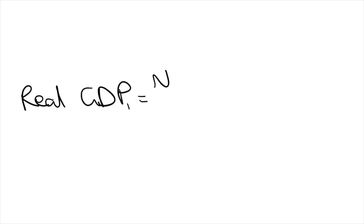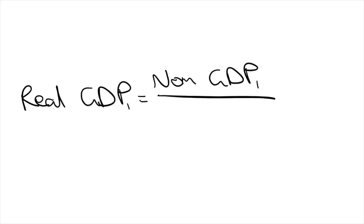That's why we also have another measurement called real GDP, which takes into account inflation. We calculate this by dividing nominal GDP by the CPI. As you can imagine, the higher the rate of inflation and CPI, the lower the real GDP, because we're losing purchasing power with inflation.